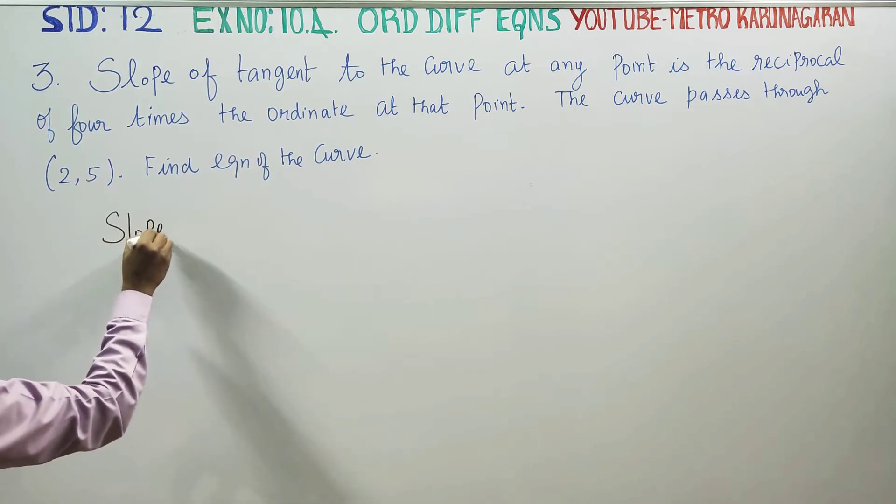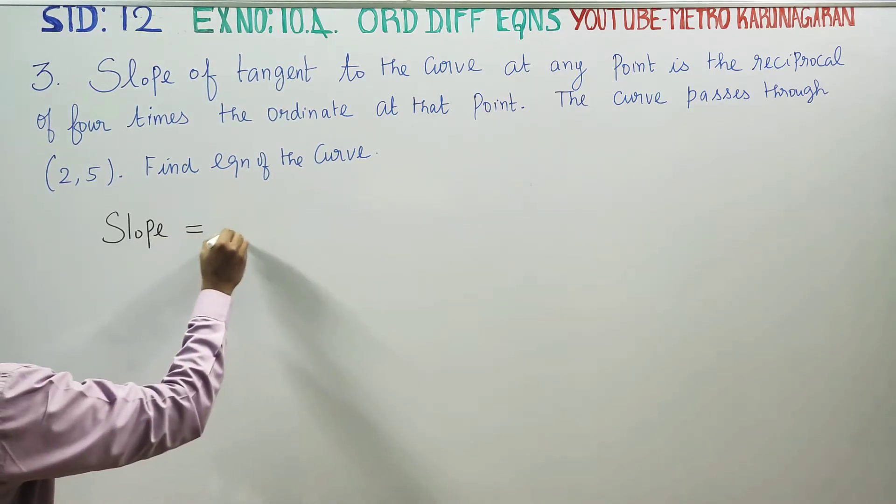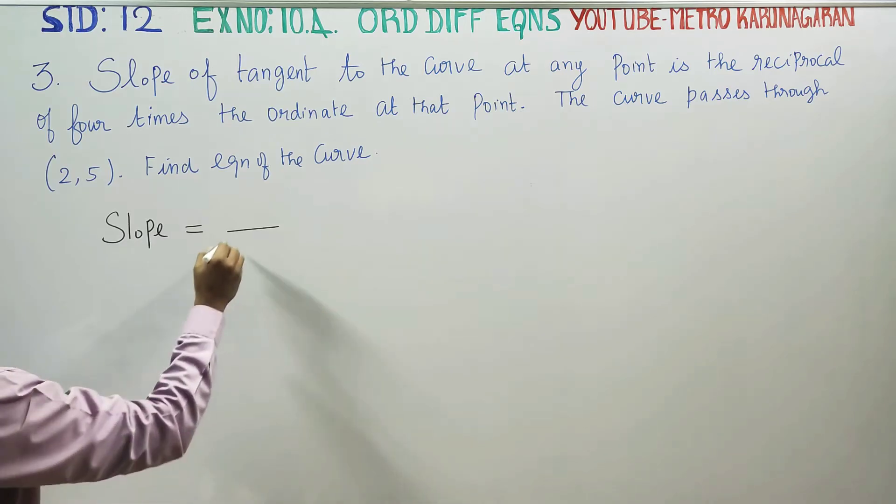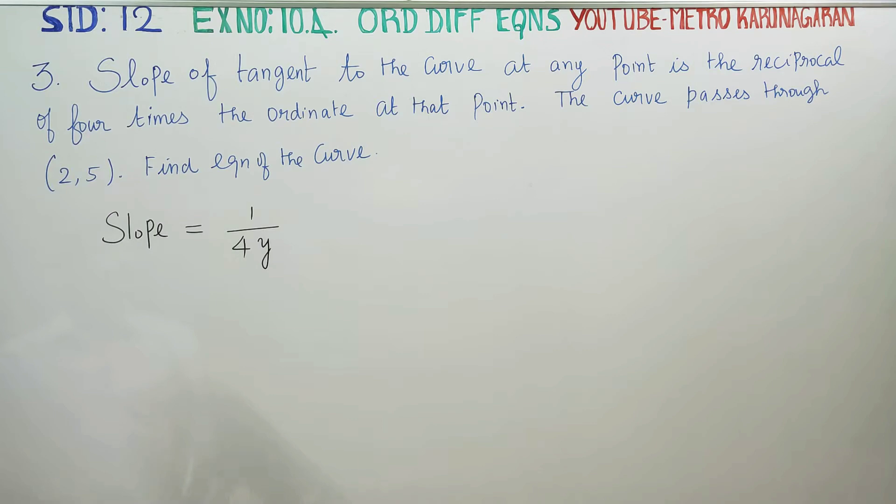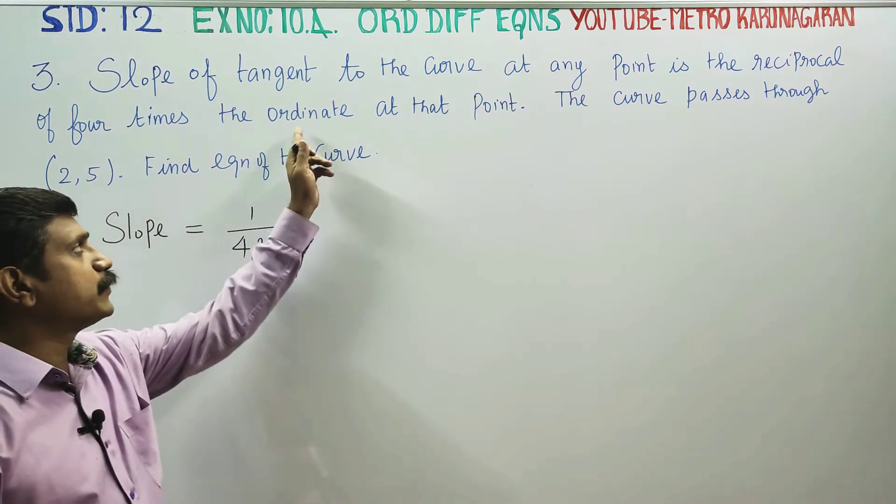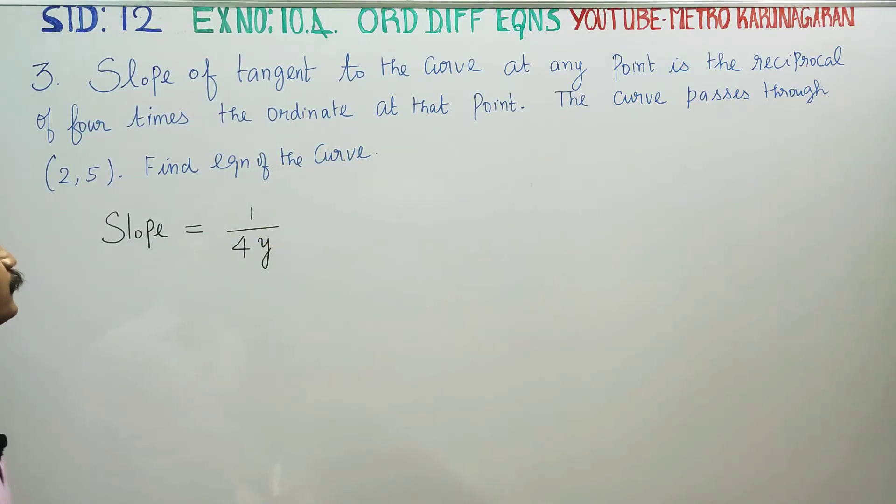The slope of the tangent to the curve at any point is reciprocal by 4 times the ordinate. Ordinate means y, abscissa means x. The slope of the tangent at a point is dy by dx.